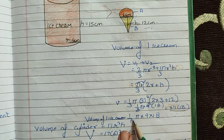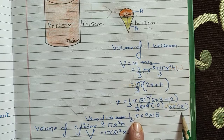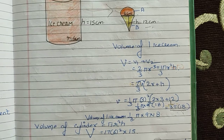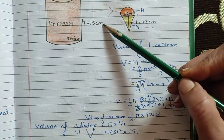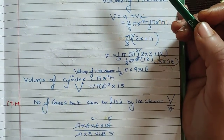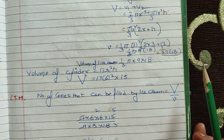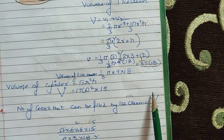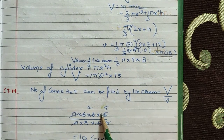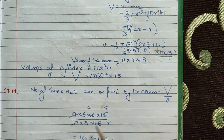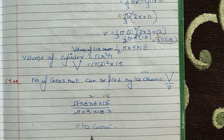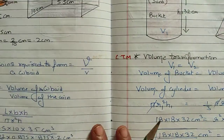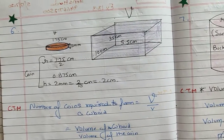The volume of one ice cream works out using (1/3)π with the values, giving 18π. The volume of the cylinder is πr²h, where r = 6 cm and h = 15 cm. The number of cones equals the volume of the cylinder divided by the volume of one cone. The answer is 10 cones.